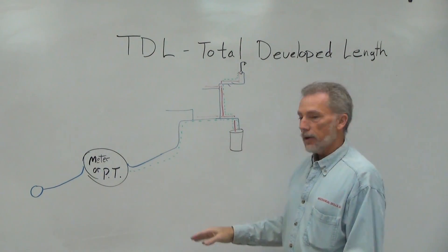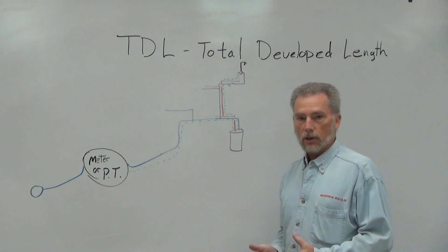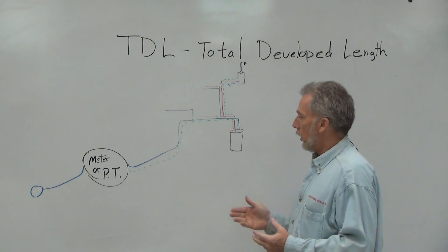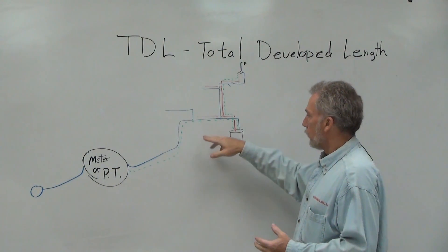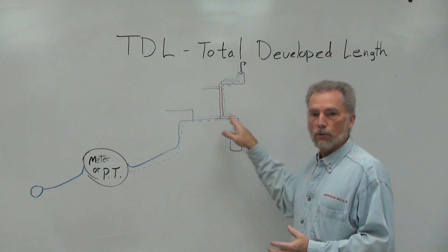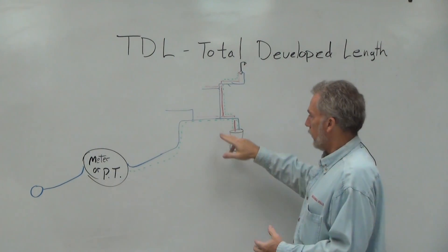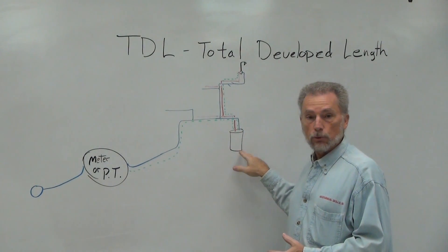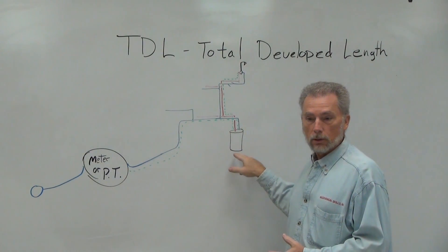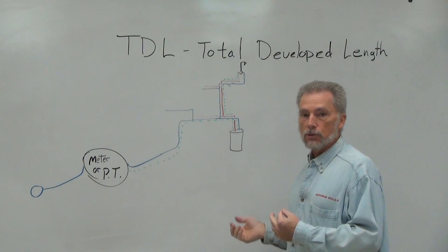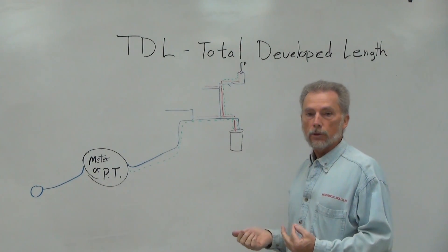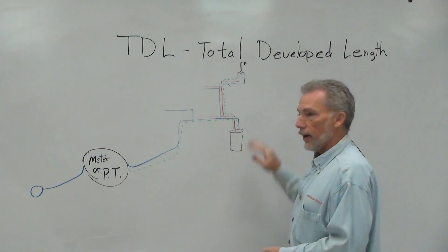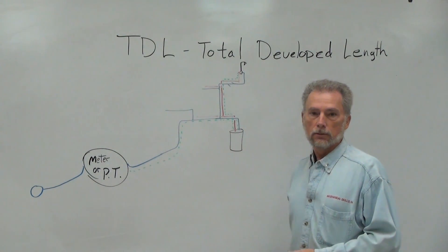This is measured through the center line of the piping, from the meter, through the valves, through the fittings, and it could possibly pass through the water heater and, if there is a treatment system, a water softener system, to get to that final destination at the shower head.